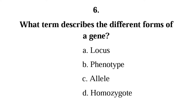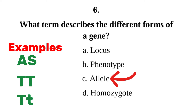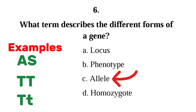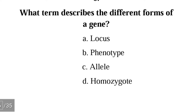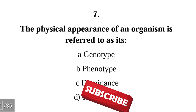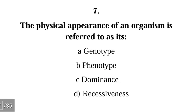Number six: what term describes the different forms of a gene — locus, phenotype, allele, or homozygote? The correct answer is C, allele. Alleles are two different forms of a particular gene — one from your father and the other from your mother — and they are located in the same place on the chromosome.